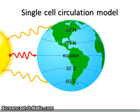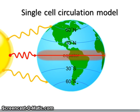The Sun's rays are less spread out at the equatorial regions than higher latitude regions. At the equator, air near the surface is warmed — it expands and begins to rise. So let's take a closer look at the single cell circulation model.